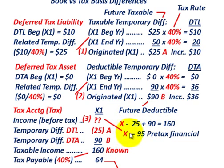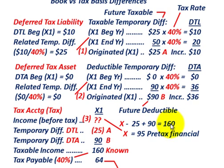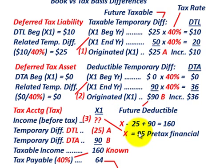Solving for X: the $25,000 subtracted amount moves over and adds to $160,000, while the $90,000 moves over and subtracts from the taxable income of $160,000. Solving the equation, X equals $95,000 as our pre-tax financial income.